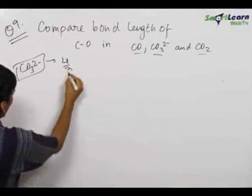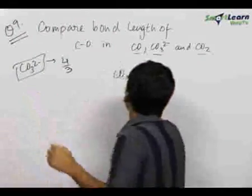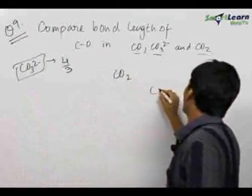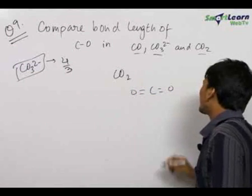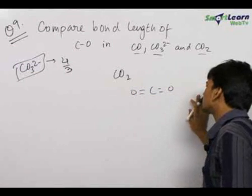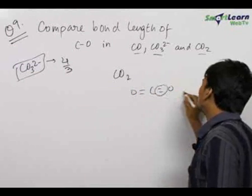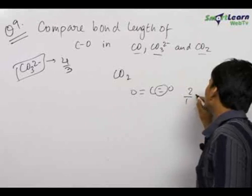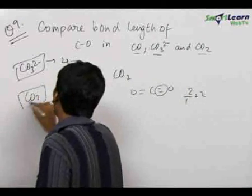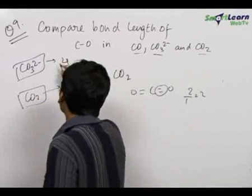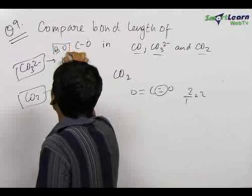Now let us check the case of CO₂. The carbon dioxide molecule is like this. It has no resonating structures. Therefore the bond order is 2 upon 1, which is equal to 2. So for CO₂ we know the bond order to be equal to 2.